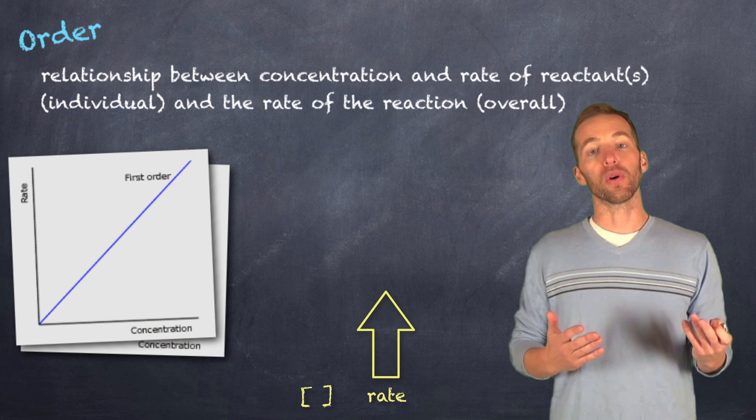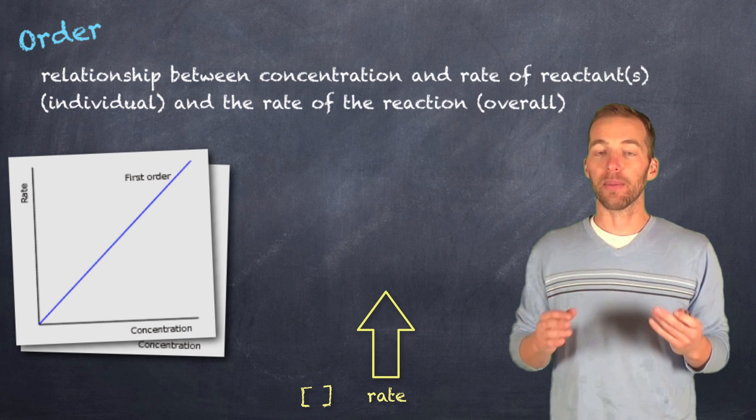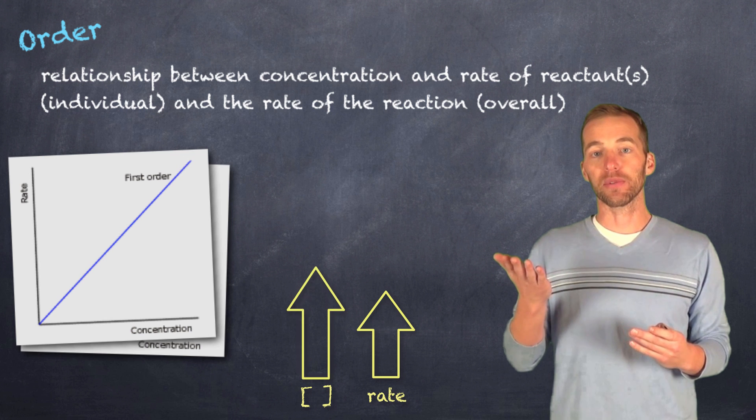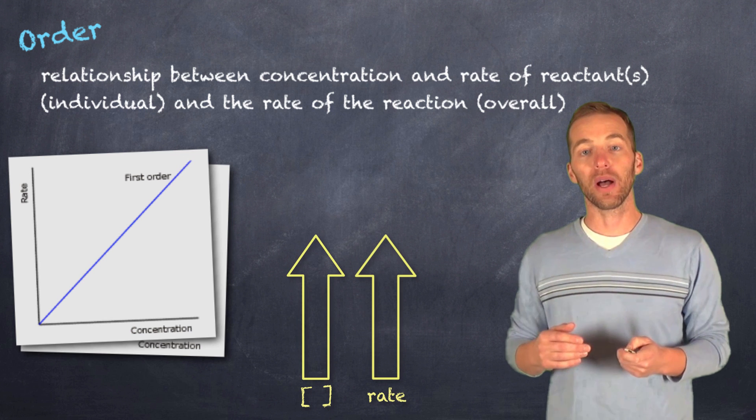If we have something, however, that's first order, that's a direct relationship between the concentration and the rate. So if something is doubled in terms of its concentration, we will notice a doubling in the rate as well.